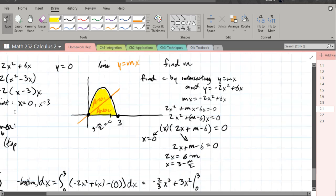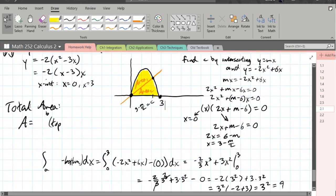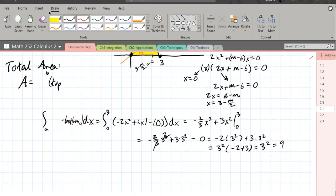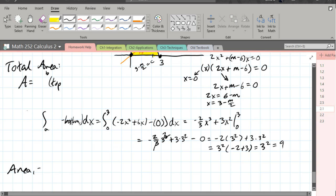Let's go ahead and find area 1 now. This is now integral from a to b, top minus bottom, dx. We got 0 to 3 minus m over 2. Top function is that quadratic, minus 2x squared plus 6x. Minus the line, which I think was mx is what I used.